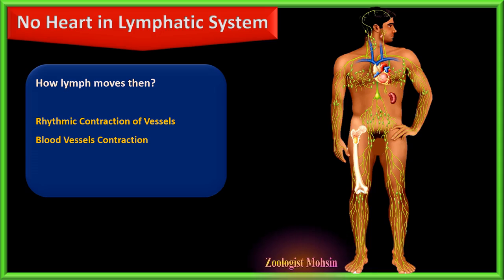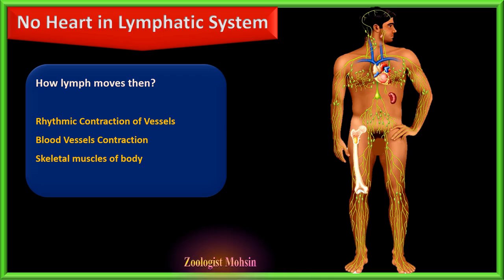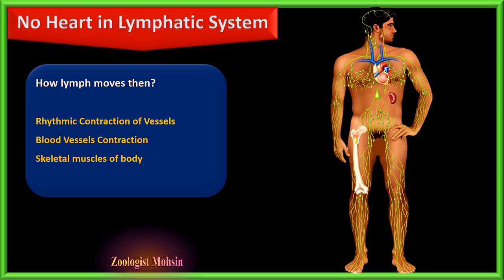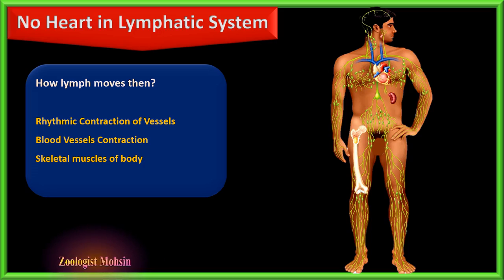Skeletal muscles present around the vessels also help in the movement of lymph, similar to how they assist veins. Additionally, lymph vessels are connected with arteries through the same sheath, so when arteries contract they also help in the contraction of the lymphatic vessels to push lymph forward.